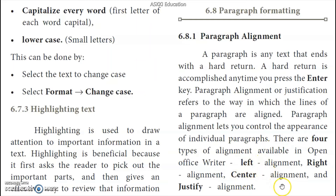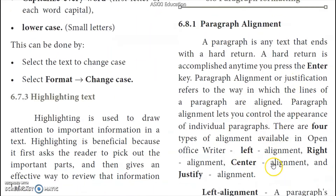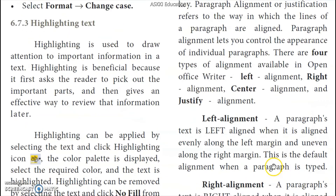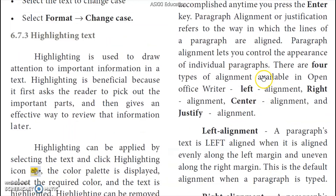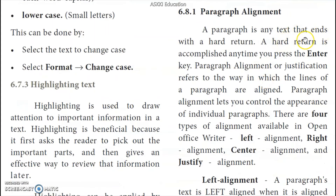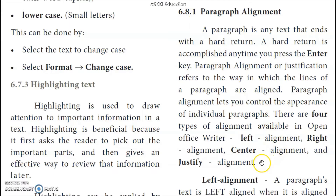Coming to paragraph formatting: in a paragraph, we can align the text. There are 4 types of alignments. A paragraph is a group of text or any text that ends with a hard return — meaning we press the Enter key. When text reaches the end of the line, it automatically wraps to the next line — this is called word wrap. If we press Enter, the previous group of text becomes a paragraph.